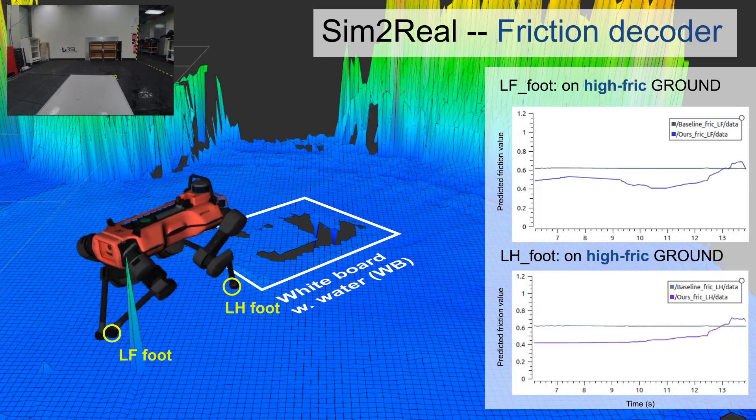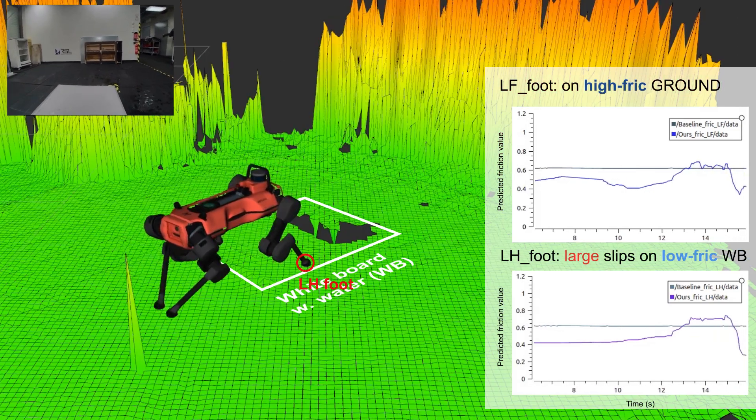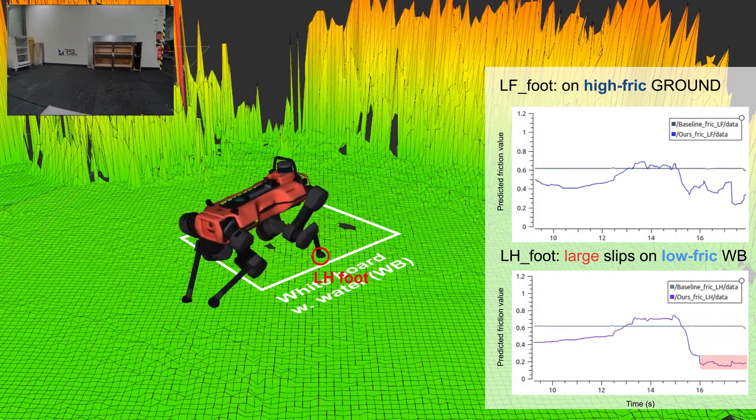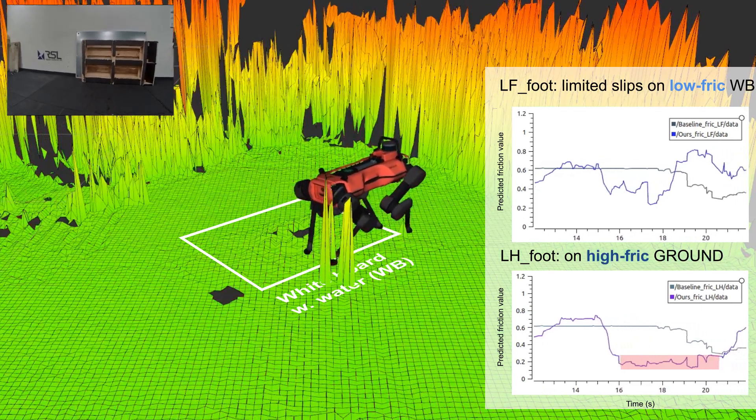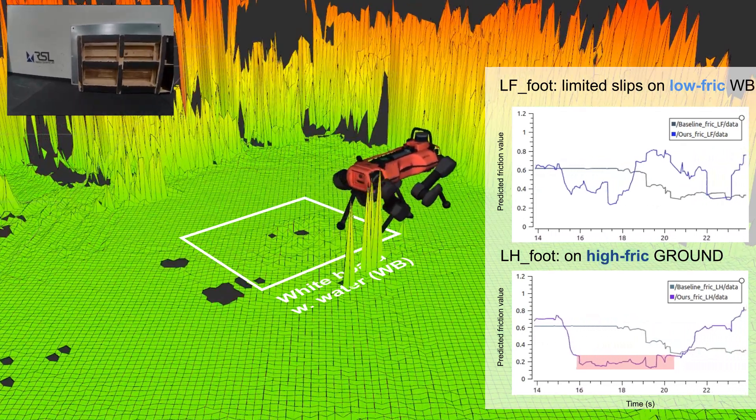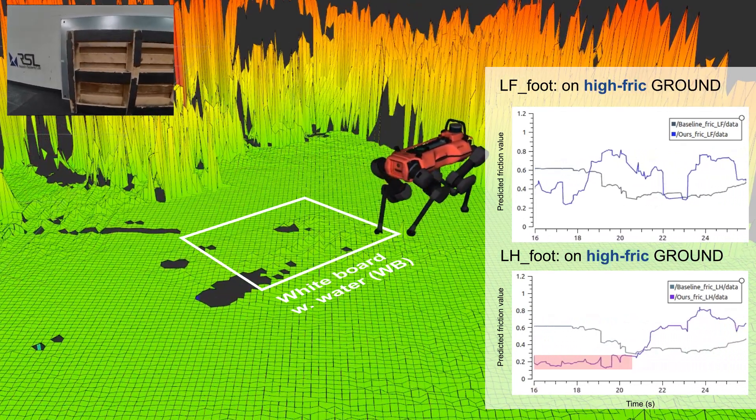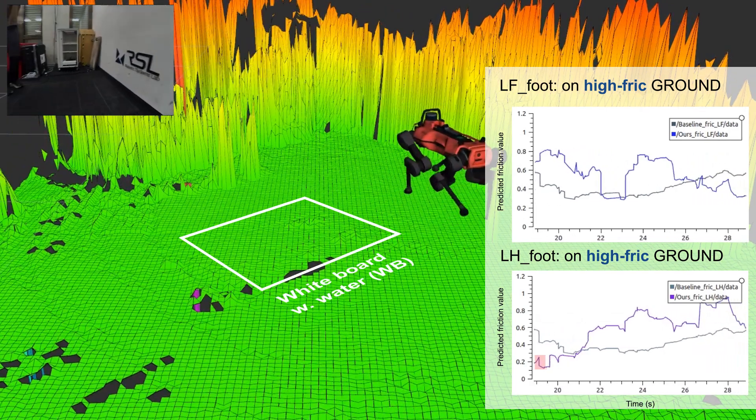Then we performed real-world tests. In the friction decoder part, we compared our decoder with a friction-only baseline model from previous work. Our physical decoders can not only sense the change of terrain physical parameters from interaction in time, but also correctly identify the difference between feet.